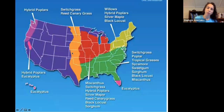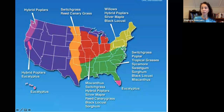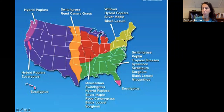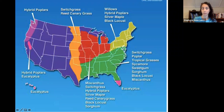For cellulosic feedstocks, there are different options throughout the country. In the Corn Belt area, we can grow Miscanthus, switchgrass, poplars, maple, canary grass, and sorghum. In the Southeast, which has a lot of rain and is a wet environment, we can get grasses, sweetgrass, Miscanthus, and poplar. In the Northeast, Miscanthus and poplar work well. There are many different plants that could serve as cellulosic feedstock.